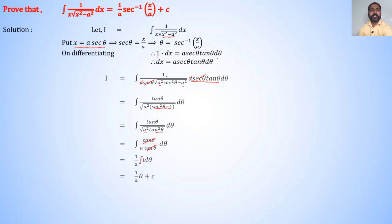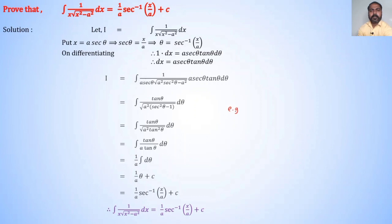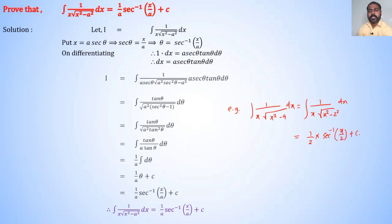Since θ = sec⁻¹(x/a), I = (1/a)sec⁻¹(x/a) + c. Therefore ∫1/(x√(x²−a²))dx = (1/a)sec⁻¹(x/a) + c. For example, ∫1/(x√(x²−4))dx: with a = 2, the answer is (1/2)sec⁻¹(x/2) + c.